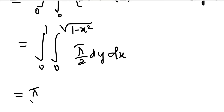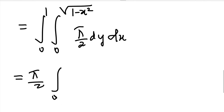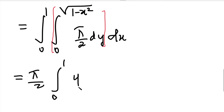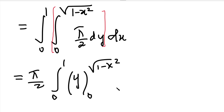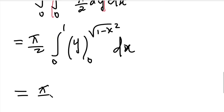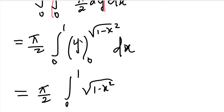Taking pi by 2 outside, we have pi by 2 times the integral from 0 to 1, and the inner integration with respect to y. Integrating dy, where y is the variable and x is constant, and applying the y limits: substituting the upper limit root of (1 minus x square) and lower limit 0, we get pi by 2 times the integral from 0 to 1 of root of (1 minus x square) dx.